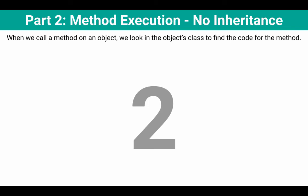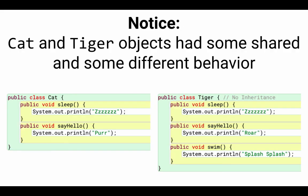Okay, so our key piece here was that when we call a method on an object, we look in that object's class to find the code for the method. And before we go on, I want you to notice that cat and tiger objects had some shared and some different behavior.